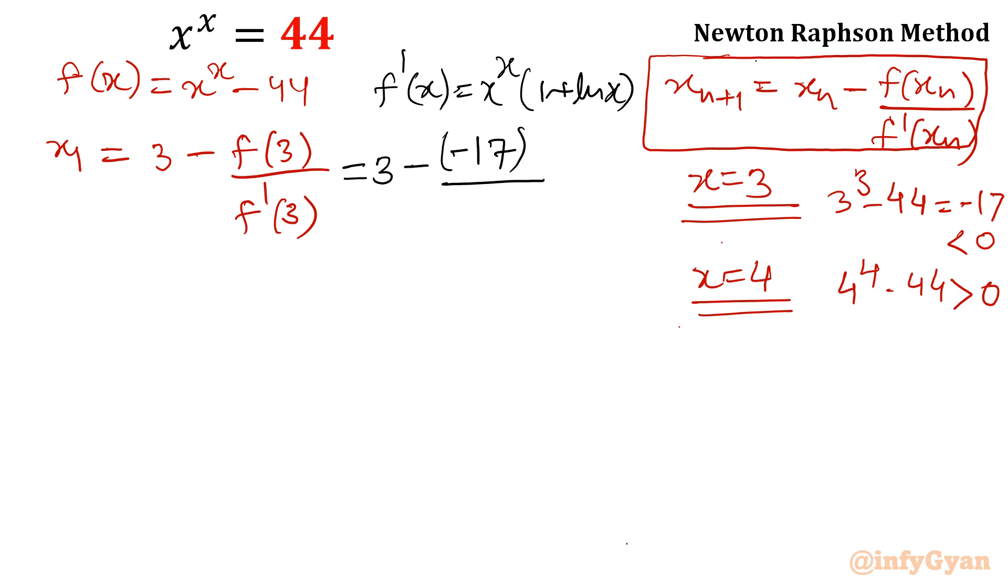Now I will put value in f dash x. So that value is coming out, f dash 3, that value is exactly 56.6625. If I will solve this value, then this is coming out 3.3000022. This is how its value will come after first iteration.